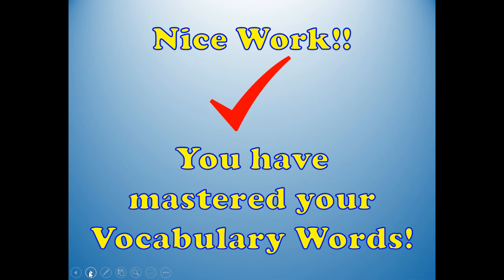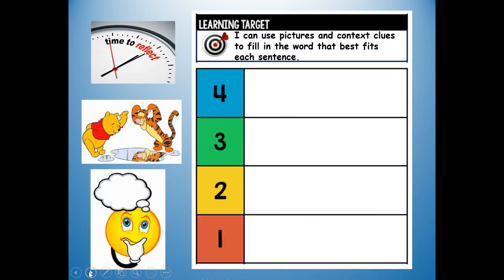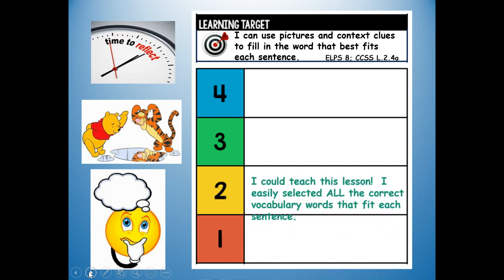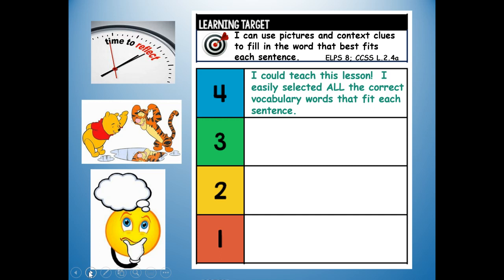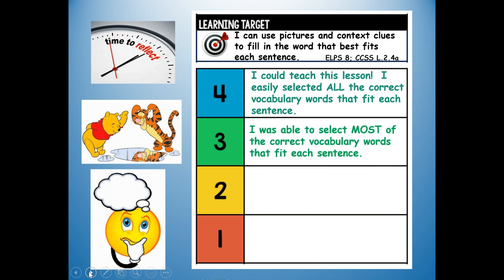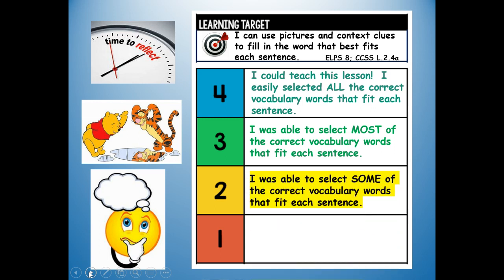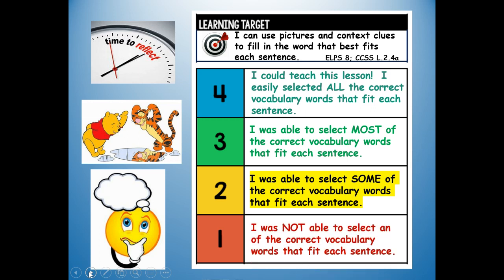Nice work — you have mastered your vocabulary words! Here's our learning target. At the top of your paper, write your reflection grade — how do you think you did? I can use pictures and context clues to fill in the word that best fits each sentence. Would it be a four — I could teach this lesson, I easily selected all the correct vocabulary words; a three — I was able to select most of the correct vocabulary words; a two — I was able to select some; or a one — I was not able to select any. Write your reflection, and when you're finished give yourself a pat on the back. Good job! Thank you, boys and girls, for reviewing the vocabulary with me — have a great day!